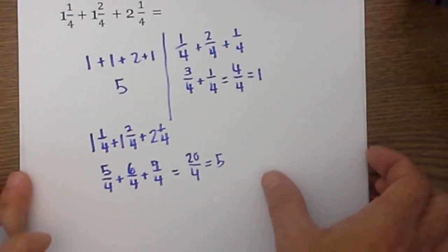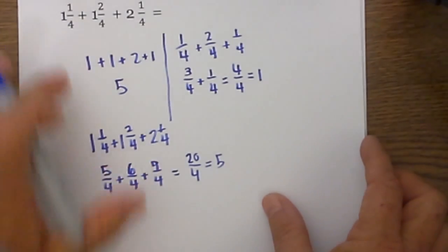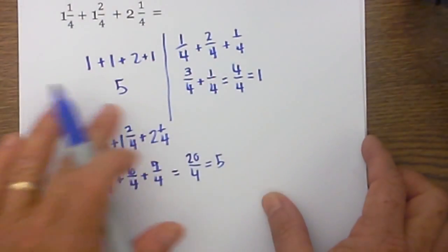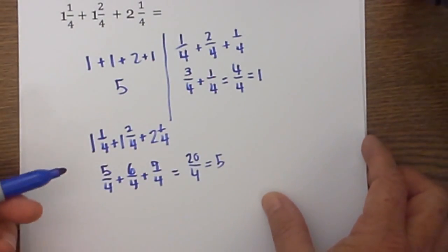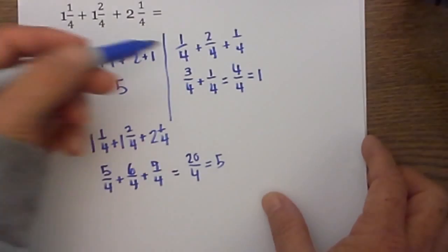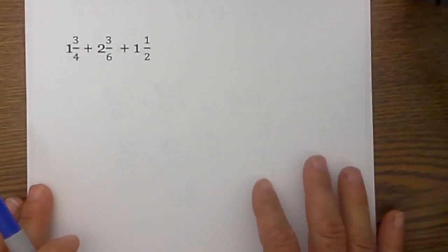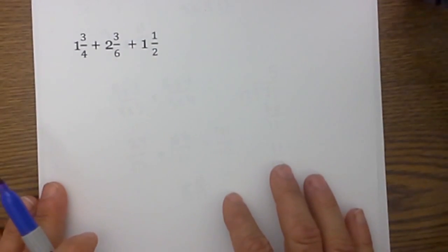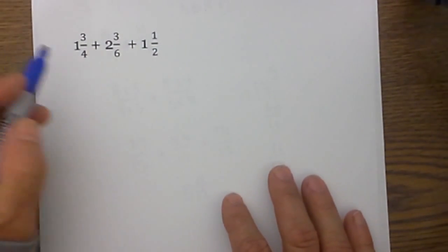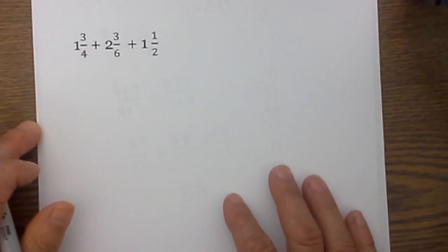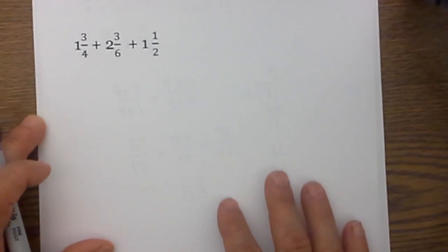Same answer. I personally think this method is a little bit easier because I enjoy it a little bit more. Let's do another one, but this time you will notice that we have different denominators, so we will have to find a lowest common denominator to solve.